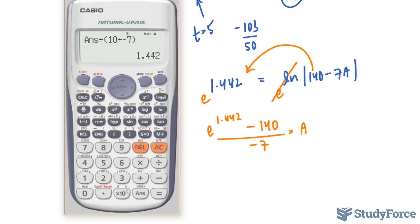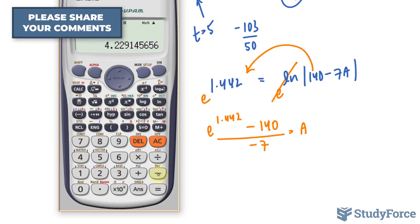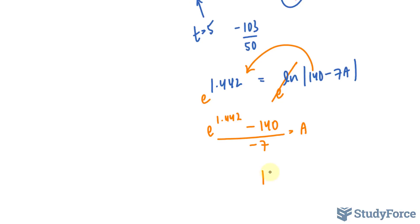Minus 140 over negative 7 is equal to my A value. Let's find out what that is. e to the power of 1.442 minus 140 divided by negative 7. That gives me 19.39 grams of salt after 5 minutes. After 5 minutes.